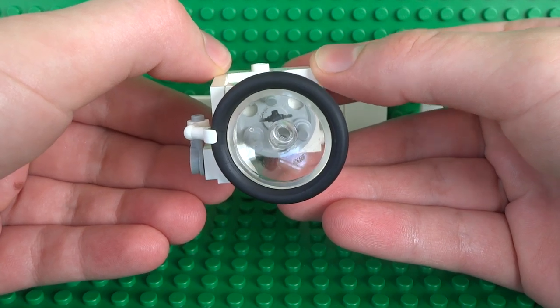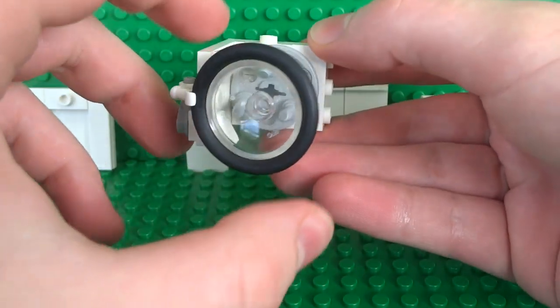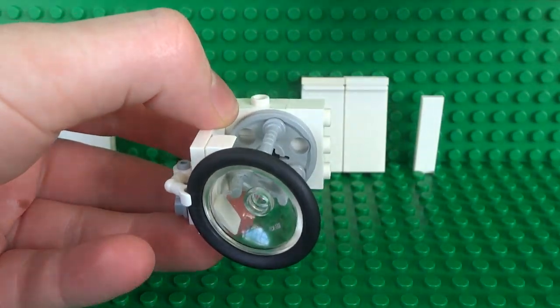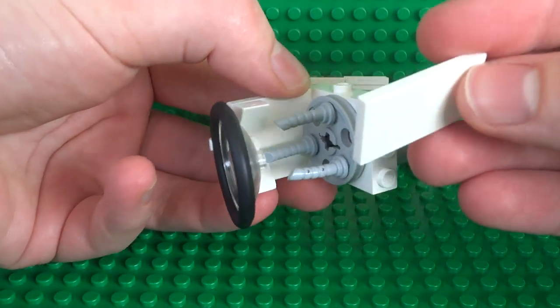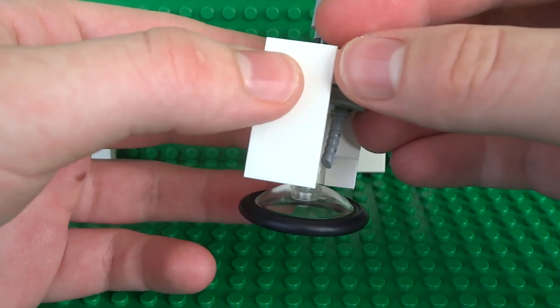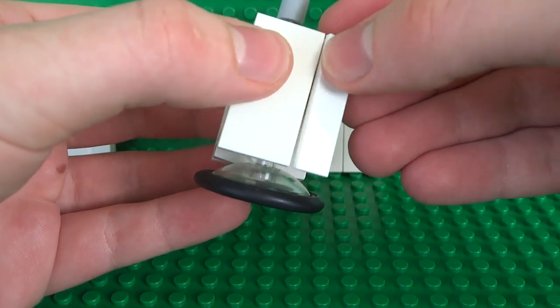So attaching the door properly can be a little bit fiddly. But once you're done it should be mostly parallel with the front of the washing machine. And we can build the rest of it. So we can just finish off this side with a 2x4 tile and a 1x4 tile.